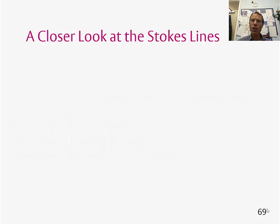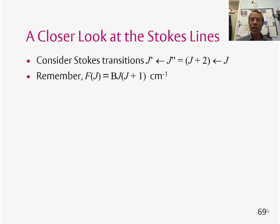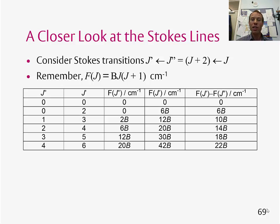Let's have a closer look at the wavenumbers of the Stokes lines. So for the Stokes transition, we're going from the quantum number J to the quantum number J plus two. We can work out what the rotational term for a level with quantum rotational number J is from this expression. We've seen that before.